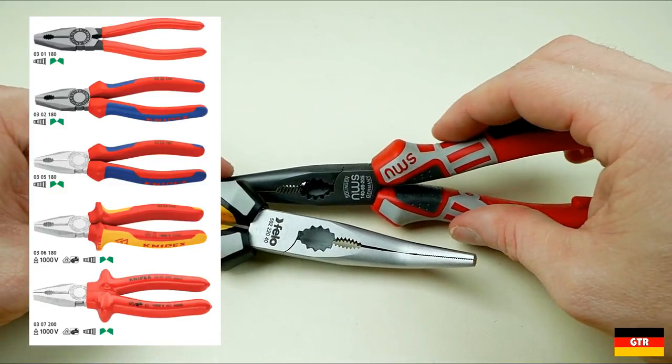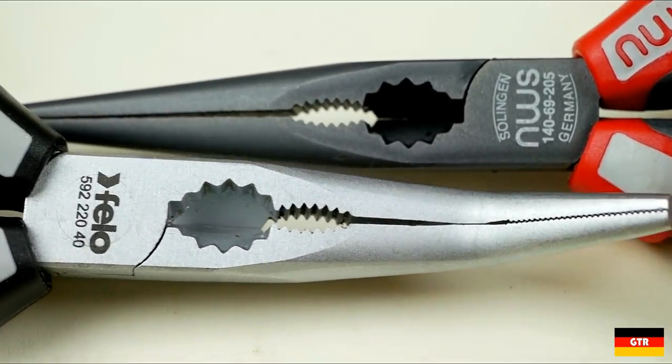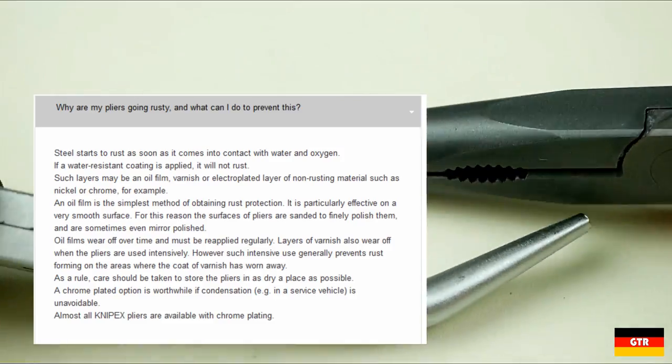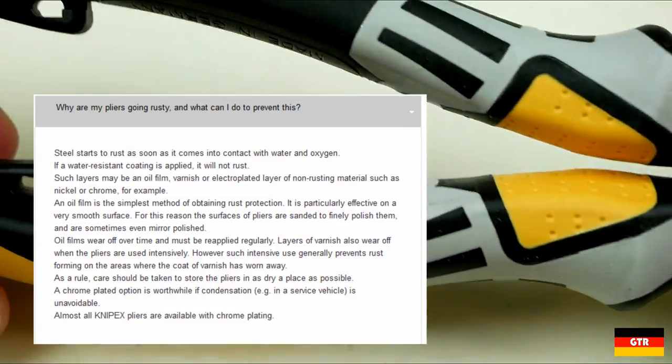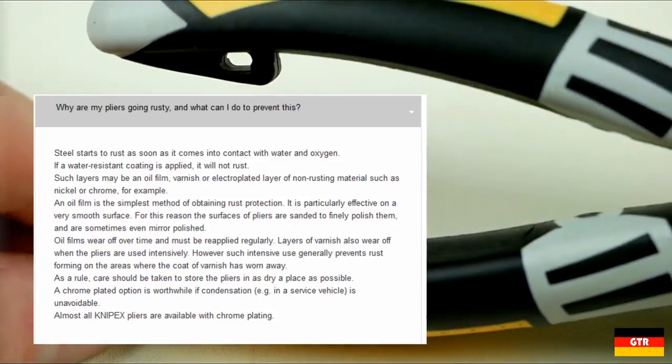I always wondered why Knipex offers both chrome and polished versions for most of their product lines. They do mention this briefly in their FAQ on the question why are my pliers going rusty and what can I do to prevent this. Their response is a chrome plated option is worthwhile if condensation is unavoidable.